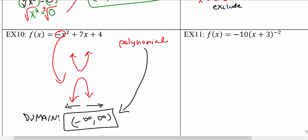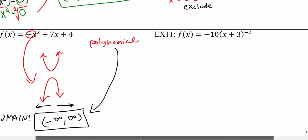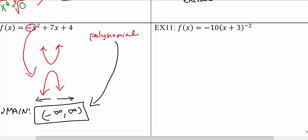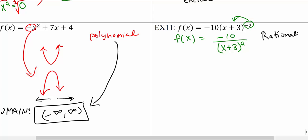For the next example, we notice a negative exponent that applies specifically to a group — not to the negative 10. We rewrite using only positive exponents by bringing the entire group down with a positive exponent of 2. This is definitely not a polynomial function; now we have a variable in the denominator, making it a rational function. We need to ensure the denominator is never zero, so we set (x+3) squared equal to zero.